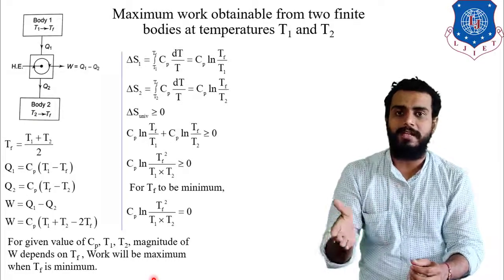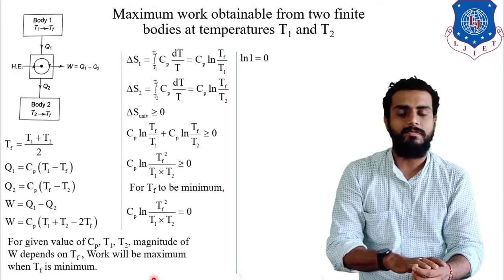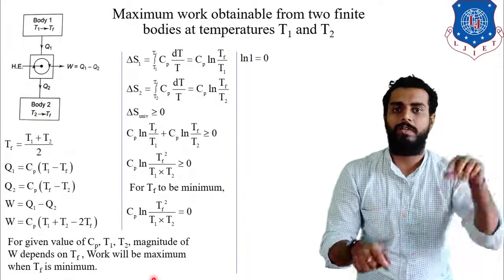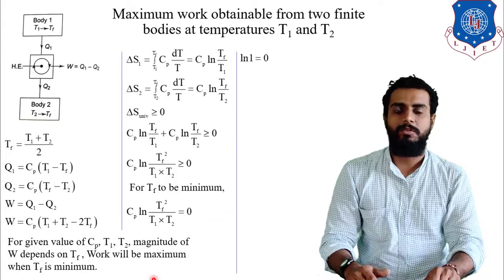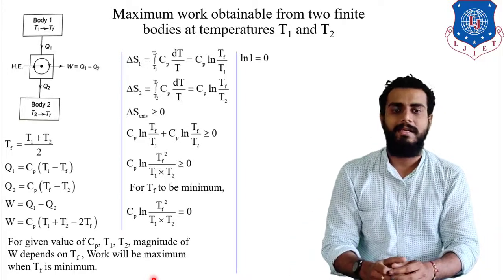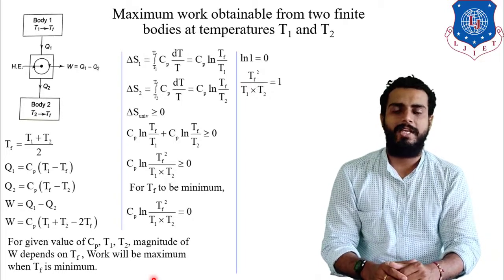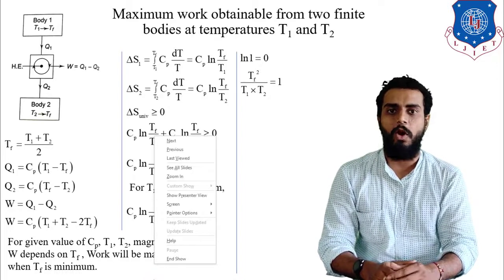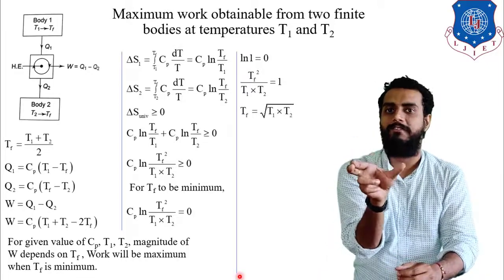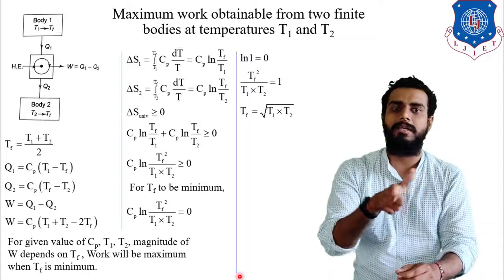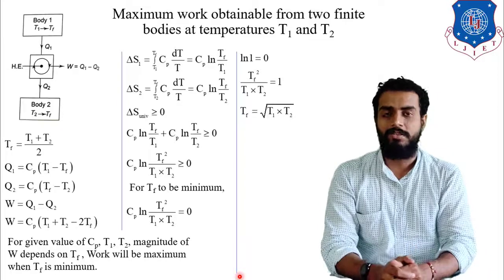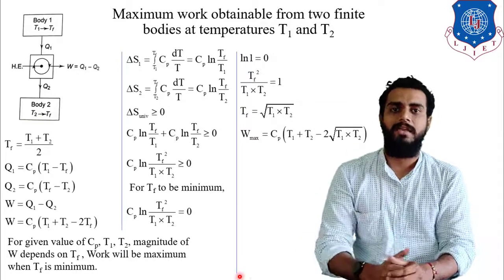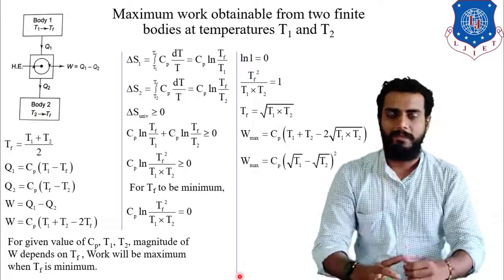Since ln(1) equals zero, comparing both sides gives Tf²/(T1·T2) equals 1, so Tf_min equals the square root of T1·T2. Substituting this into the work equation gives W_max equals Cp into (T1 plus T2 minus 2√(T1·T2)), which can also be rewritten as Cp times (√T1 minus √T2) squared.